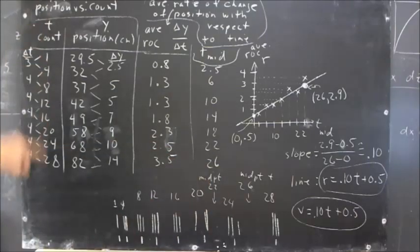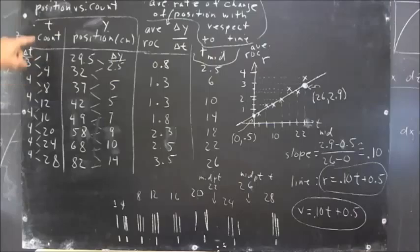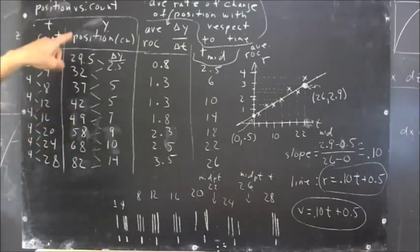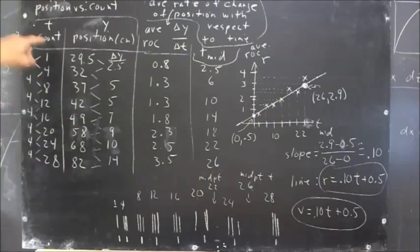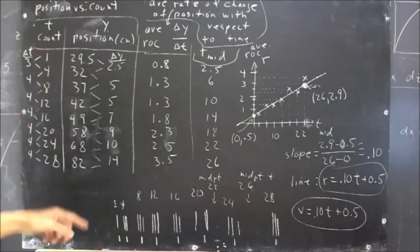We get data for the count or the time, the number of clicks, and position. So we have position versus clock time, position measured in centimeters.